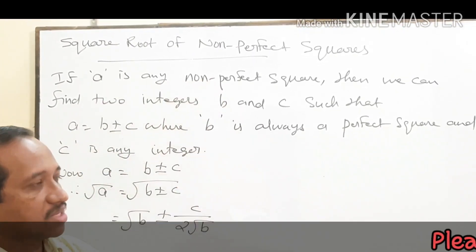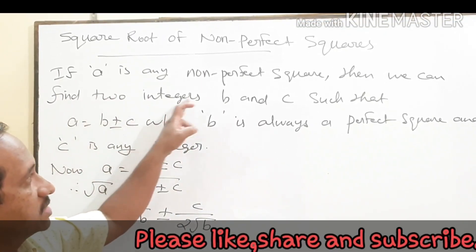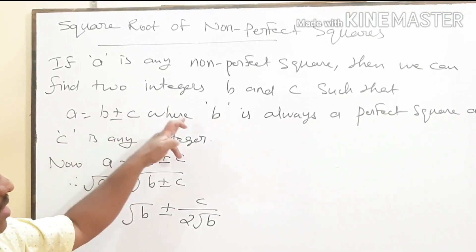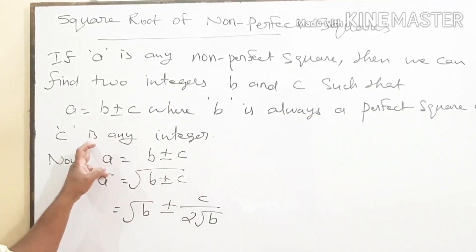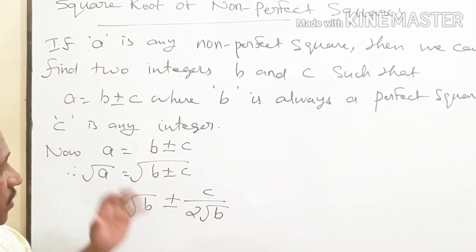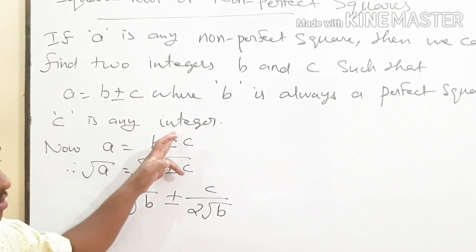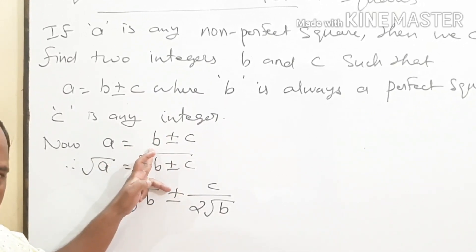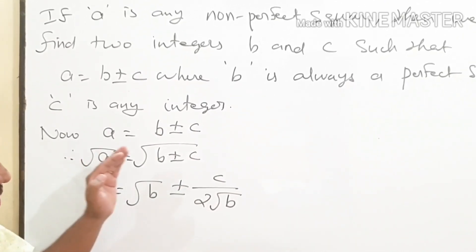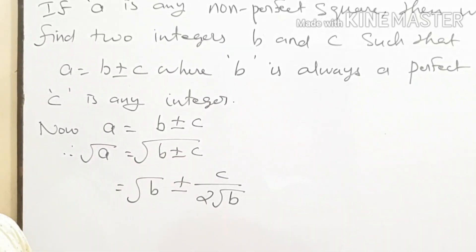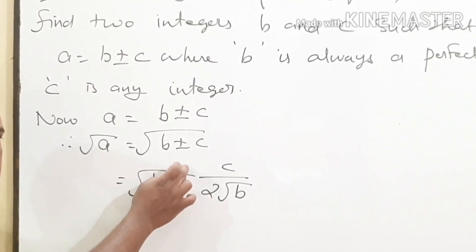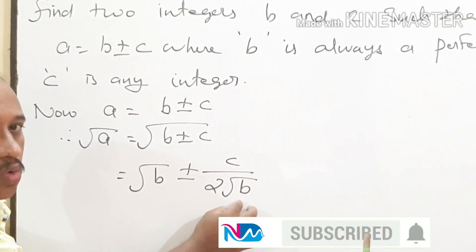If A is any non-perfect square, then we can find two integers B and C, such that A is equal to B plus or minus C, where B is always a perfect square and C is any integer. That means we can split A as the sum or difference of a perfect square and any other integer. Then, root of A is equal to root of B plus or minus C, and the formula is: root of B plus or minus C divided by 2 root B.